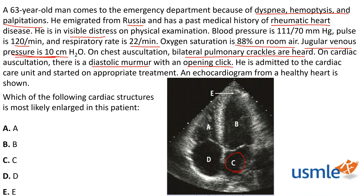Going through the other answer choices: E is the LV apex — it shouldn't be enlarged here since he has mitral stenosis with no LV problems. D is the right atrium — also shouldn't be enlarged; we expect a left-sided problem. C is the left atrium — our correct answer; in mitral stenosis we'd expect this to be enlarged. B is the LV — we'd actually expect this to be normal-sized in mitral stenosis. A is the RV — also expected to be normal-sized.